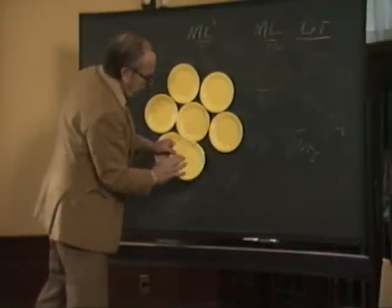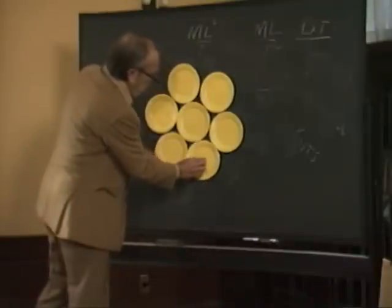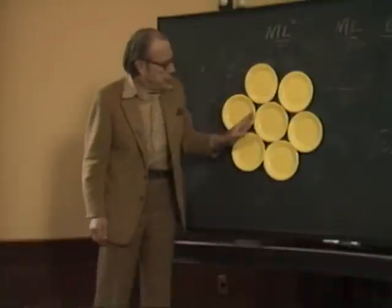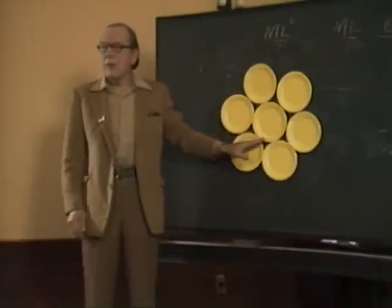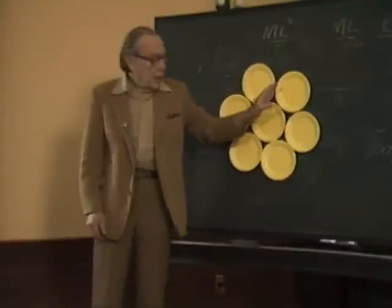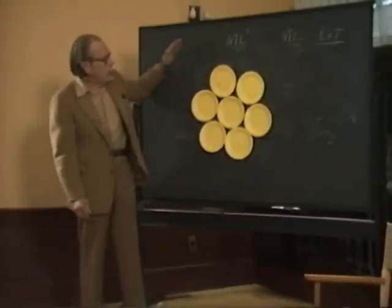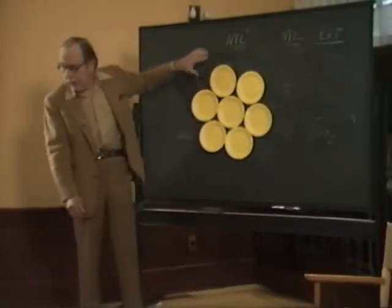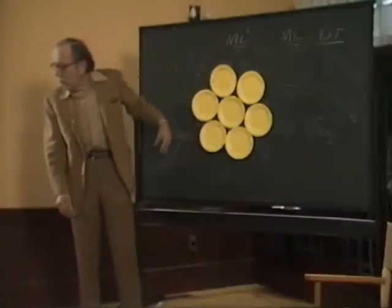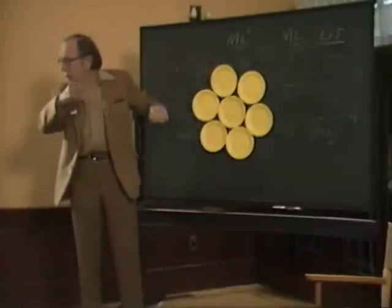Now, if I'd done this perfectly, they would fit exactly. Now what's happened? See, I had a circle and then I started adding more things and I end up by getting a circle. This could be multiplied — I could make another one that would fit around this, and then another and then another, until I had six around one again. I'd have another seven, and that could go on indefinitely.